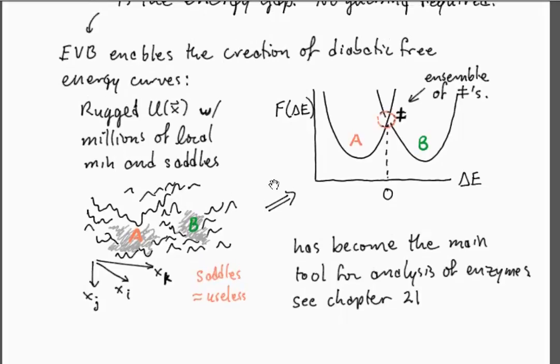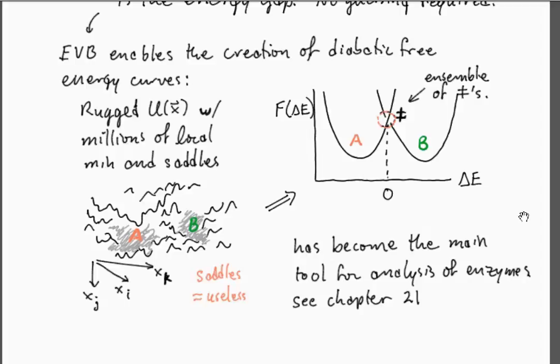The point that I want to emphasize is that the energy gap and the empirical valence bond framework provide a very simple way of taking a really rugged and complicated landscape with lots of degrees of freedom that you don't care about and allowing you to build a simple model for the transition state region from a model for this state and a model for this state, blending the two, and also allowing you to make this very simple projection onto free energy landscapes.